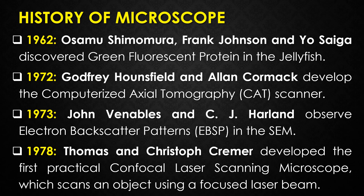In 1962, Osamu Shimomura, Frank Johnson, and Yo Saiga discovered the green fluorescent protein (GFP) from the jellyfish. This green fluorescent protein fluoresces bright green when exposed to blue light. In 1972, Godfrey Hounsfield and Alan Cormack developed the computerized axial tomography scanner, the CAT scanner.